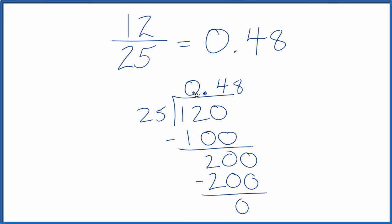So 12 divided by 25, 0.48. And that's just like we found before. So the fraction 12 25ths equals the decimal 0.48.